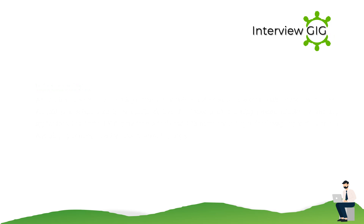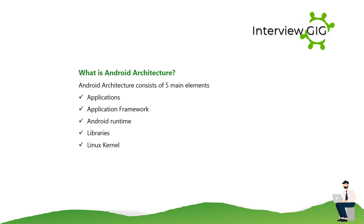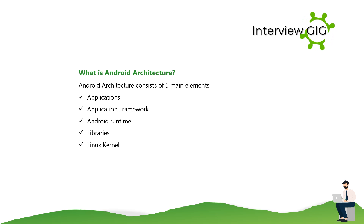What is Android architecture? Android architecture consists of five main elements: applications, application framework, Android runtime, libraries, and Linux kernel.